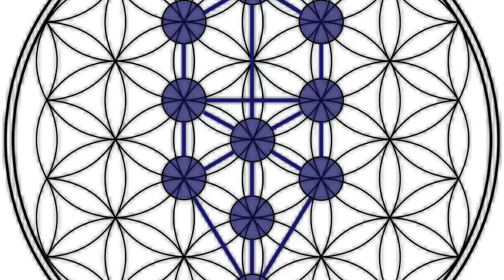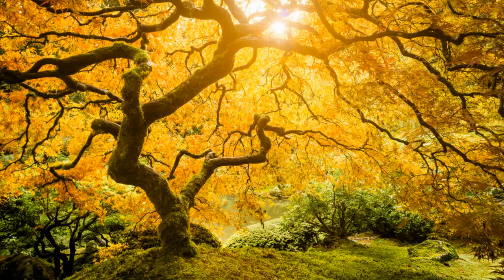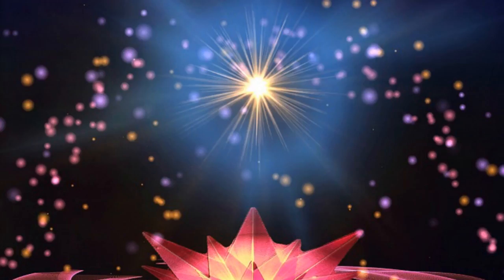Get into a meditative state and visualise a powerful channel of pure divine energy descending in a column into a focal point in your local community or into a node point in the planetary network. Now imagine that same light spreading through the various channels and connections within the network. Think of blood spreading through capillaries bringing life and energy, or pure cool water flowing into dried out and dusty pipes.